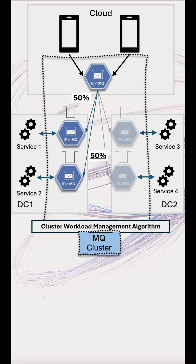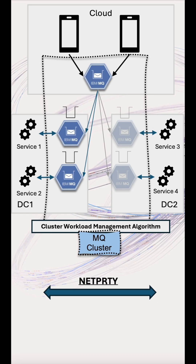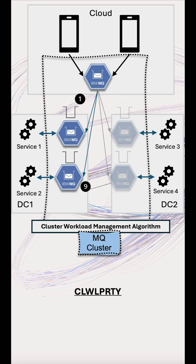If there are two channels, each is selected 50% of the time. Any channels in an unready state are discounted, and channels can be made a primary or preferred by setting network priority on the cluster receiver, with a 0 to 9 ranking. If there are still multiple options, we check the workload priority attribute on the queue and only keep those with the highest value.